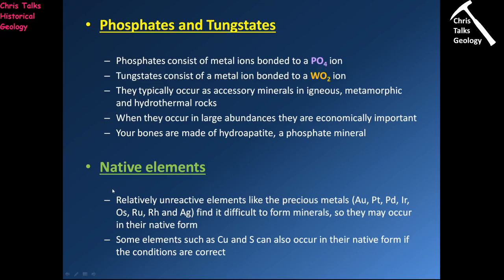Native elements are formed by any element that doesn't really want to bond itself to a group — the unreactive elements such as gold, platinum, palladium, iridium, osmium, ruthenium, rhodium, silver, and also copper and sulfur. These are elements that occur by themselves and are not bonded to any of the mineral groups we just covered.